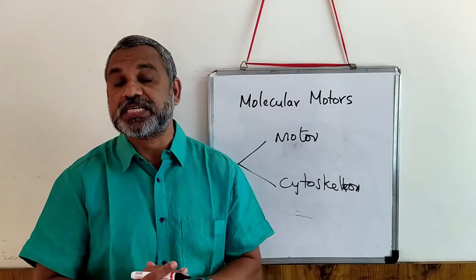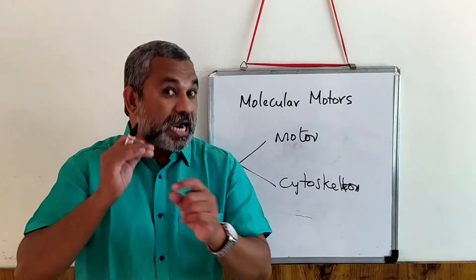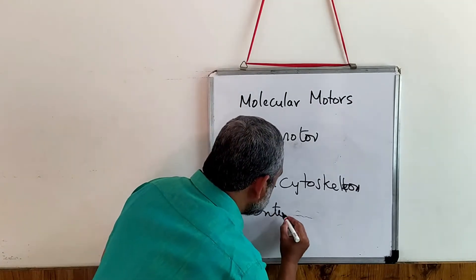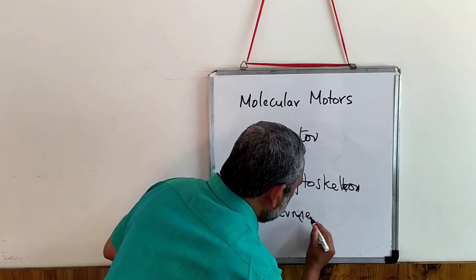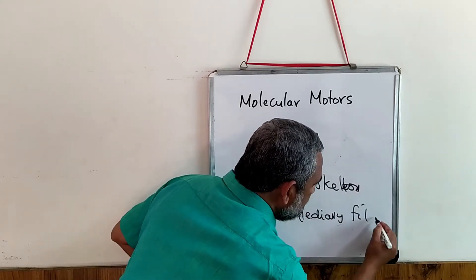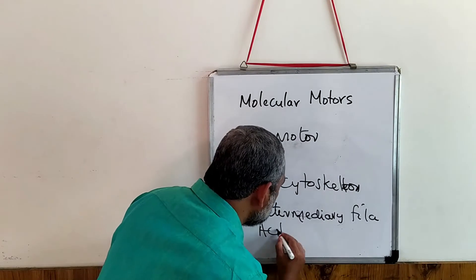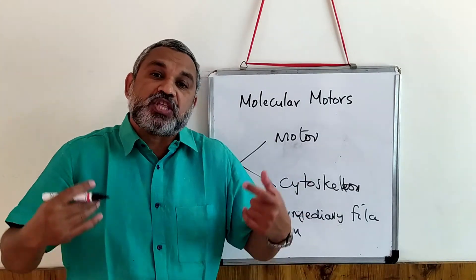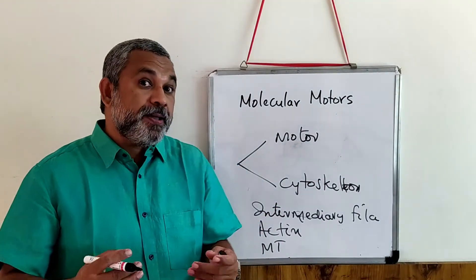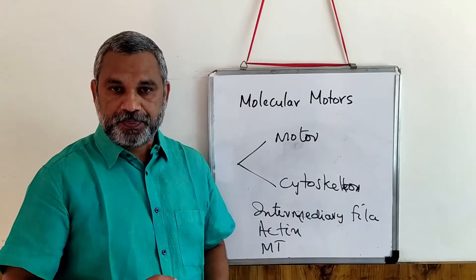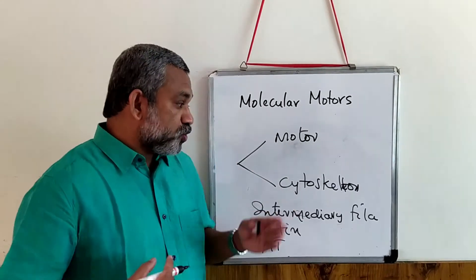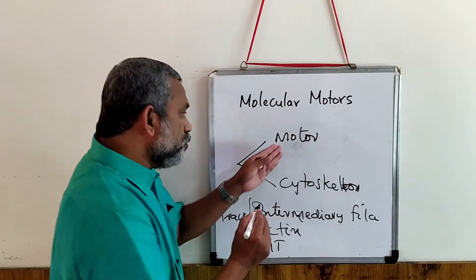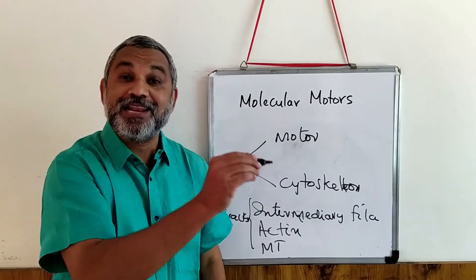There is a very good network of cytoskeleton which consists of three things: one is intermediary filaments, there is an actin molecule — actin filaments — and also there are microtubules. These are the three cytoskeleton filaments that help in directed motion in a cell. These are forming a kind of tracks, so you have a motor and you have a track in order to deliver the cargo.